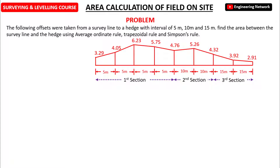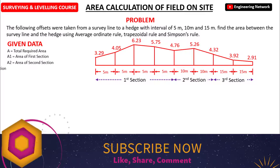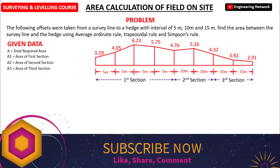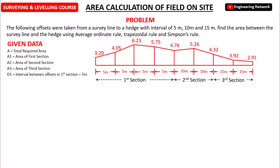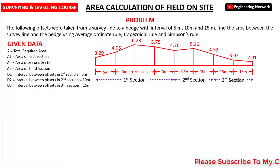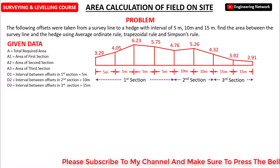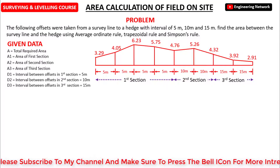In the given data, A is the total required area. A1 is the area of the first section with interval 5m, A2 is the area of the second section with interval 10m, and A3 is the area of the third section with interval 15m. D1 is 5m, D2 is 10m, and D3 is 15m.